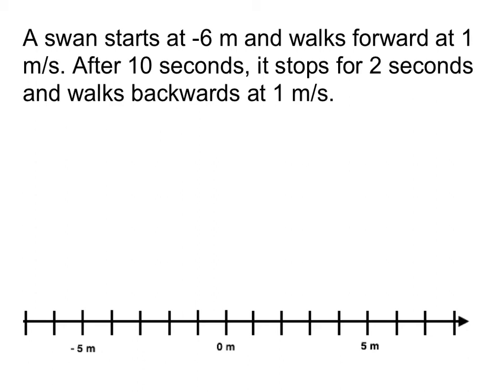All right, one final example. We have here a swan that starts at negative six meters and walks forward at one meter per second. After 10 seconds, it stops for two seconds and walks backwards at one meter per second. Now there's a lot of things going on here, so what I'm going to do is...